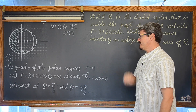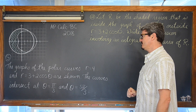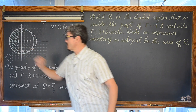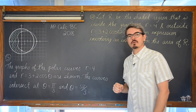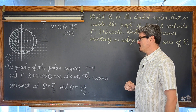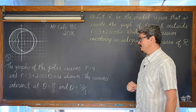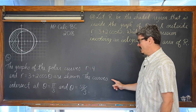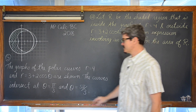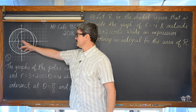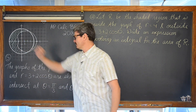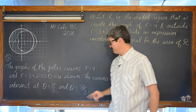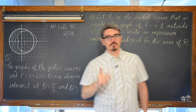Here we have the graphs of the polar curves: r is equal to 4, the equation of a circle centered around the pole, and r is equal to 3 plus 2 cosine of theta, a limaçon, are shown. The curves intersect at theta is equal to pi over 3 and theta is equal to 5pi over 3.